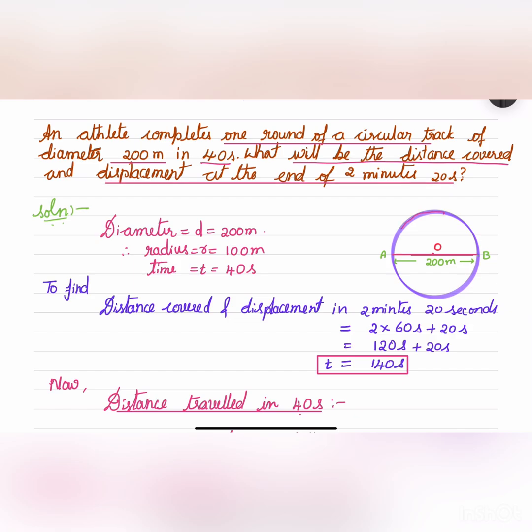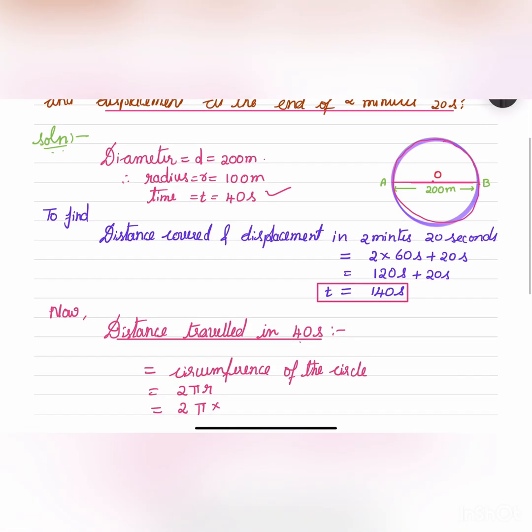So the track is circular and its diameter is 200 meters, and we need to find out the distance covered in 40 seconds to complete the track. The track is circular so it will be 2πr.